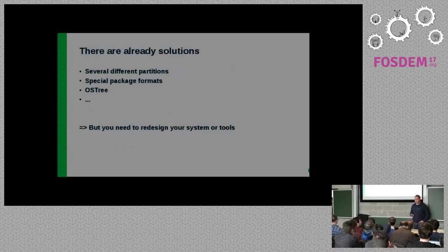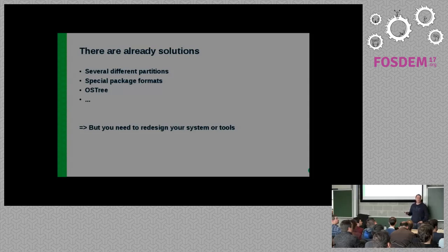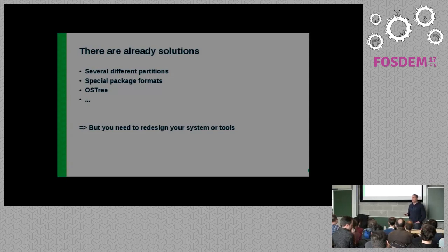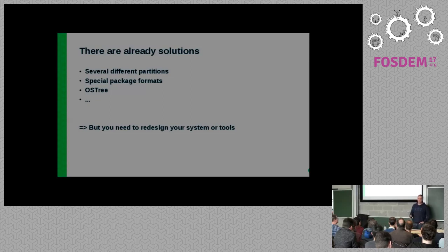I know there are already solutions. Some work with different partitions — you update one partition and then jump to the next on the next boot. Others use special package formats; we have OSTree. But all these solutions have one major drawback: you need a redesign of your system or tools, especially with a new package format. But looking at our OpenSUSE or SUSE infrastructure, customers all know how RPMs work. They have infrastructure to build and verify RPMs. So I was looking for something that lets us stay with what we already have.